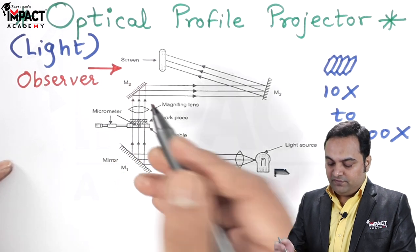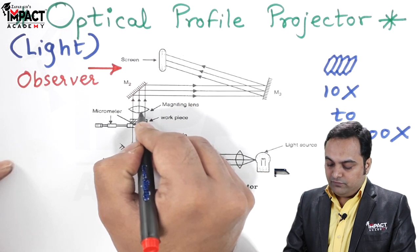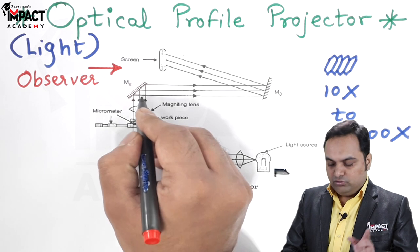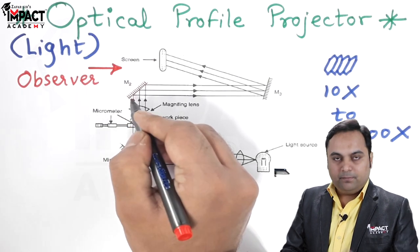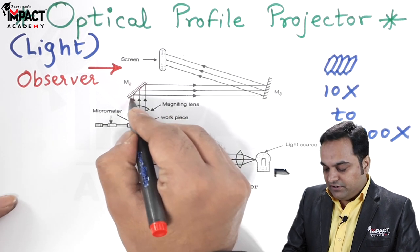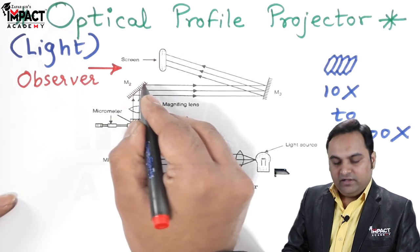The light passes through the workpiece, goes onto the magnifying lens, through that passes onto mirror M2, so the image gets multiplied or magnified.